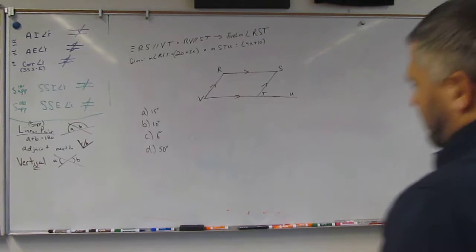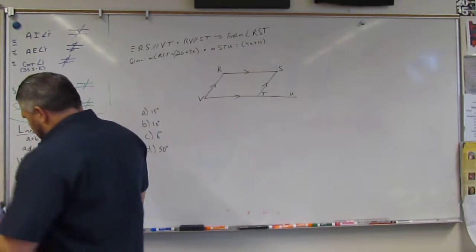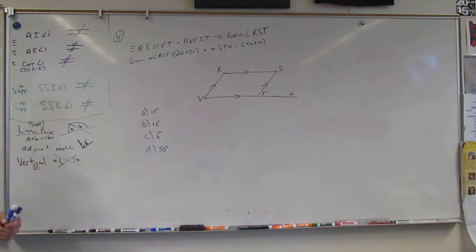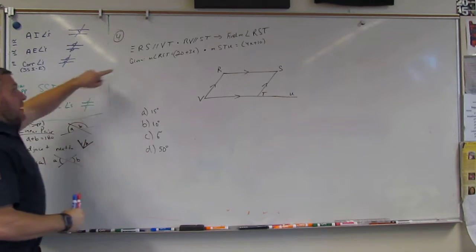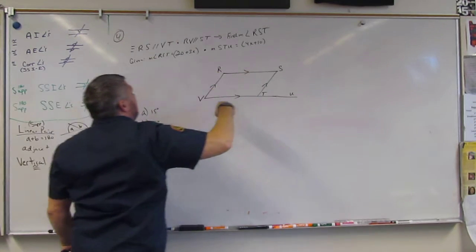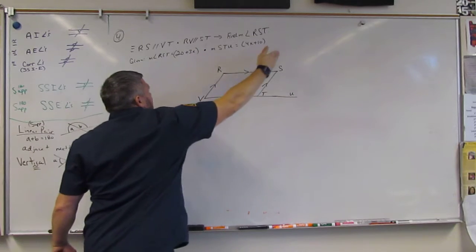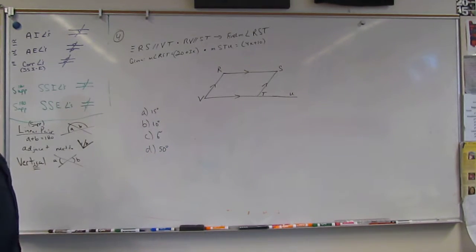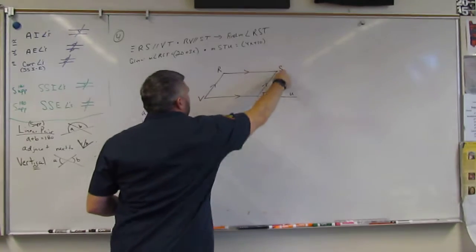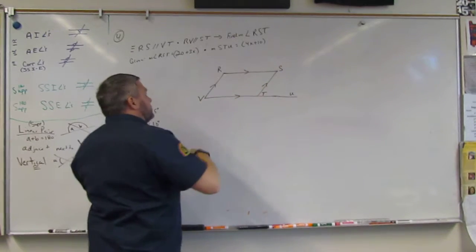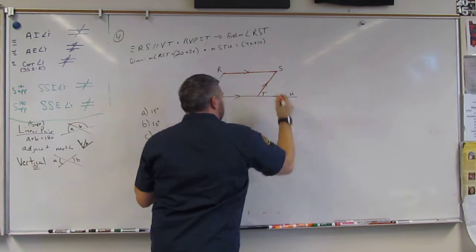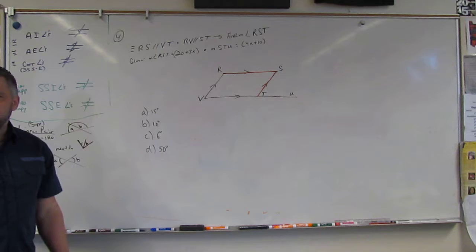Alright, this is problem number 4 on the practice test for chapter 3. Given that RS and VT are parallel, these are parallel, and RV and ST are parallel, find RST. That means I'm trying to find this angle RST.